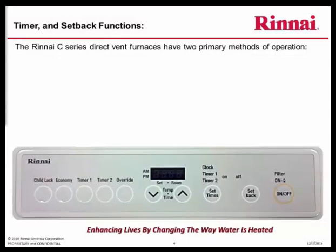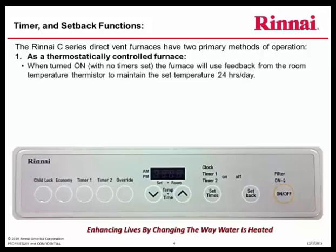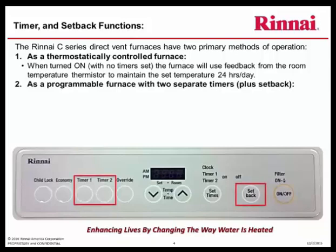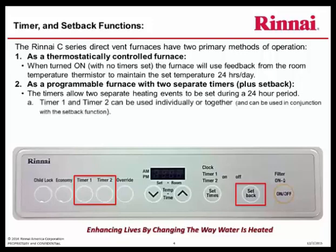The Rinnai C-Series direct vent furnaces have two primary methods of operation. One, as a thermostatically controlled furnace — when turned on with no timers set, the furnace will use feedback from the room temperature thermistor to maintain the set temperature 24 hours a day. And two, as a programmable furnace with two separate timers plus the setback. The timers allow for two separate heating events to be set during a 24 hour period. Timer 1 and timer 2 can be used independently or together, and can be used in conjunction with the setback function.